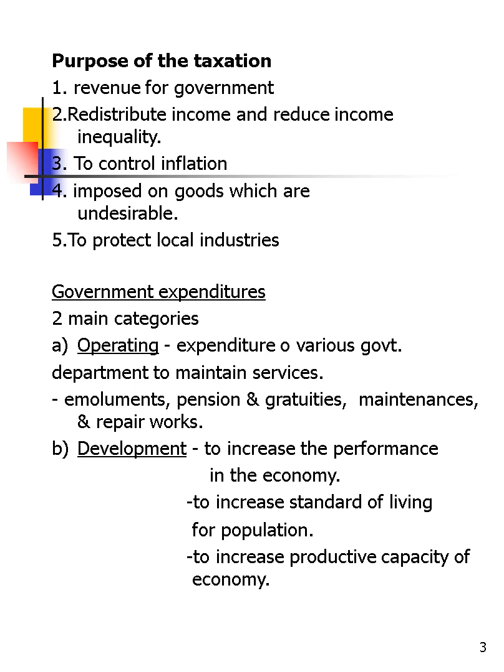What about government expenditure? Government expenditure has two main categories. The first one is operating and the second one is development. Operating means expenditure across various government departments to maintain their service operations. Examples include emoluments, pensions, maintenance and repair works.